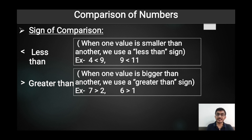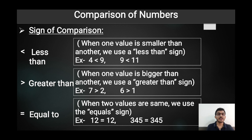The last sign is 'equal.' When both numbers are equal, we write the equal sign between the two numbers. For example, 12 and 12 are the same number, so we write the equal sign between them. Next example: 345 and 345 — both numbers are equal, so we write the equal sign between both numbers.